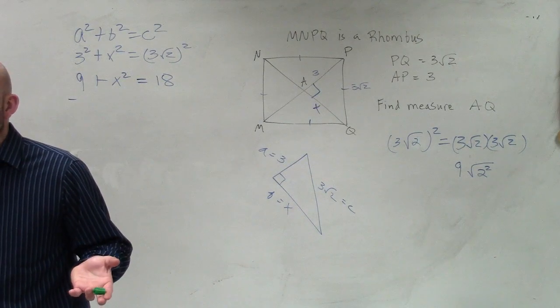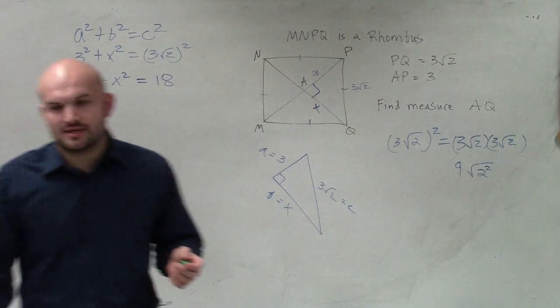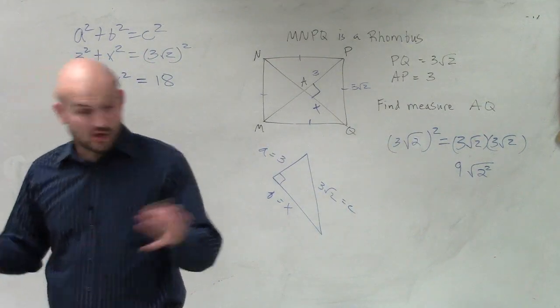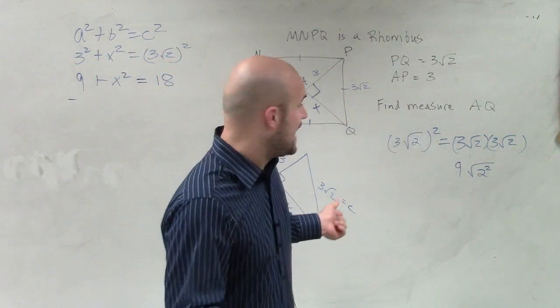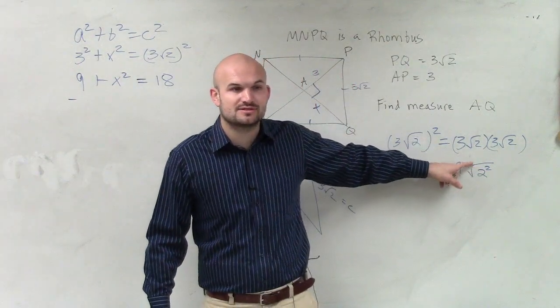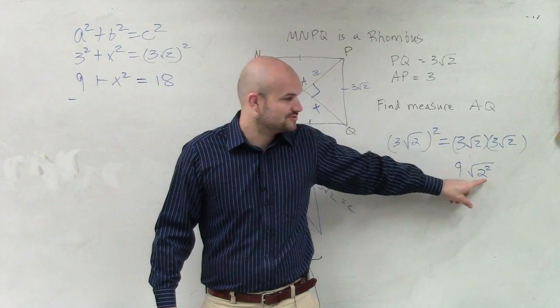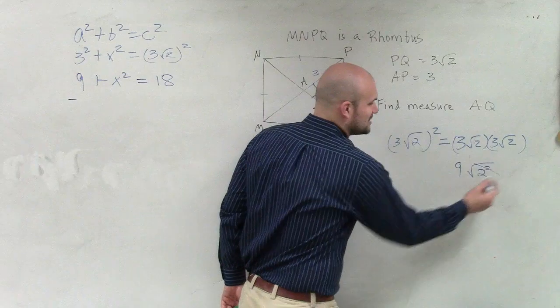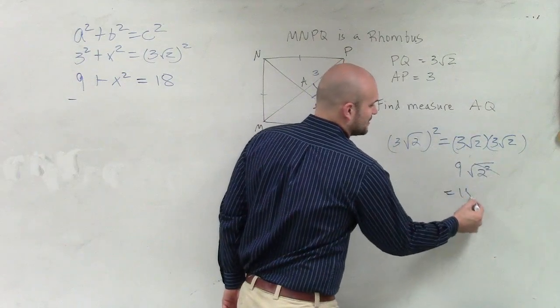The inverse operation of adding, Berta, is subtracting. The opposite operation of division, Samantha, is multiplication. The opposite operation of taking the square root, Sierra, is squaring. These are opposites. So therefore, those undo each other, and you're just left with 18.